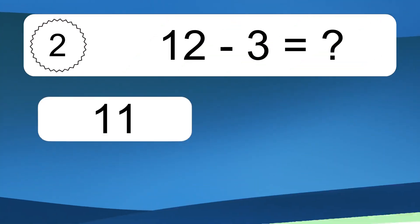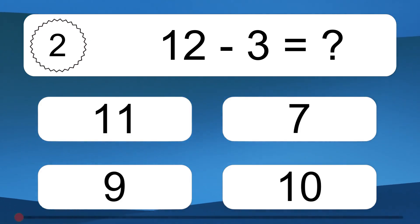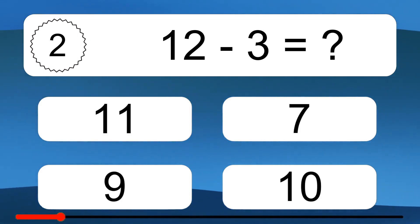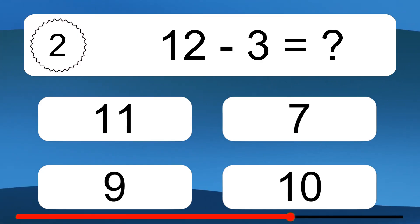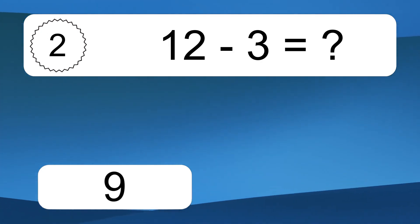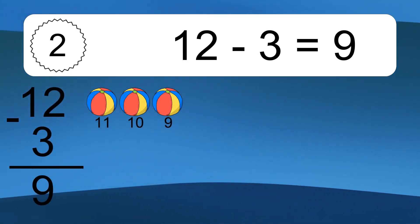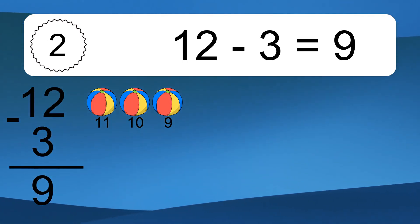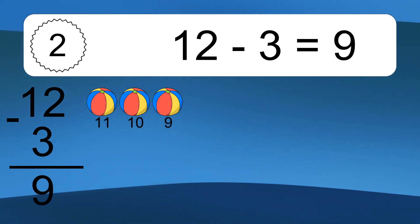12 minus 3 equals what? 12 minus 3 equals 9. Let's count it: 11, 10, 9.